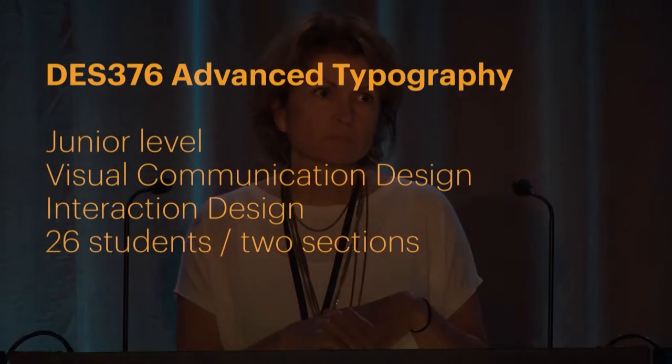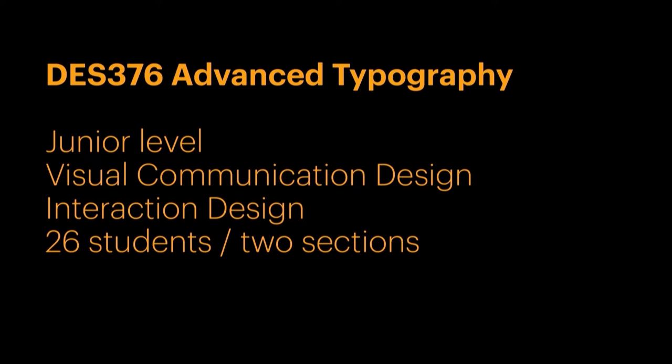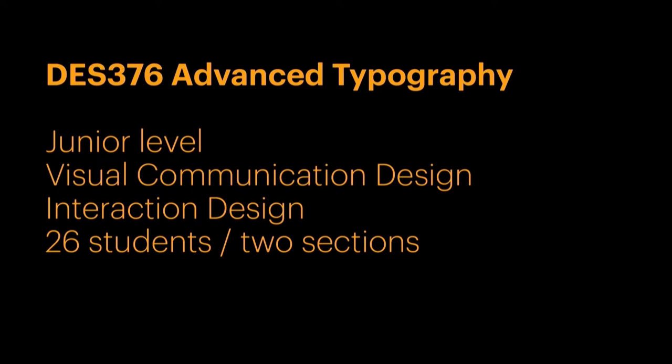The back story is these students are juniors. It's a required class for all the visual communication designers in the program, but we also have interaction designers and industrial designers, so there are a few of those that take it as an elective. They would have had one sophomore class before, a 60-person class, so they know what kerning and leading and those kinds of things are, but they forget a lot of it over the summer. It's 26 students, two sections of this class.